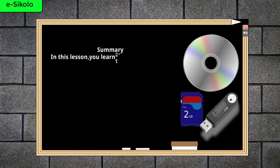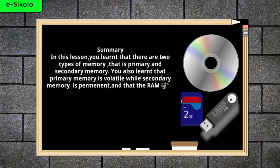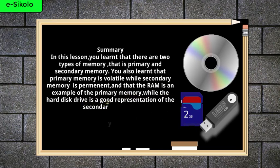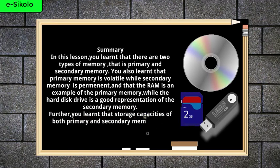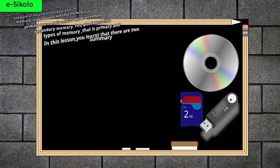Summary. In this lesson, you learnt that there are two types of memory: primary and secondary memory. You also learnt that primary memory is volatile while secondary memory is permanent. The RAM is an example of primary memory while the hard disk drive is a good representation of secondary memory. You also learnt that storage capacities of both primary and secondary memory vary depending on the device or media, and that secondary memory has more storage capacity than primary memory.